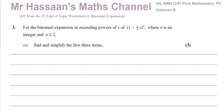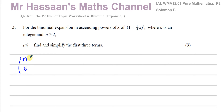For this question, it says: for the binomial expansion in ascending powers of x of (1 + ¼x) to the power of n, where n is an integer and n is greater than or equal to 2, find and simplify the first three terms. Normally what we use is the NCR method. The first term has a coefficient, which is the power, then you take the first term, which is 1, to the power of 0, and the next term which is ¼x, put to the highest power. For ascending powers of x, this starts as (¼x) to the power of 0 and 1 to the power of n.